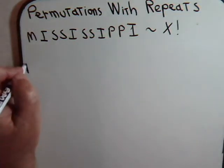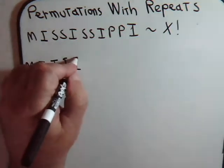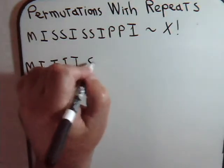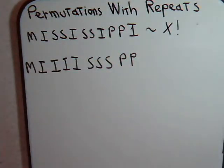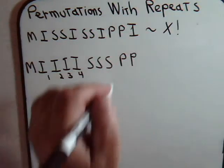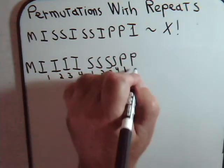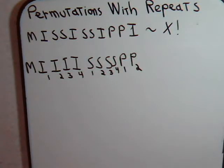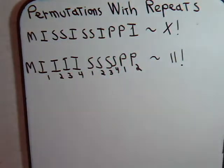We certainly suspect that x factorial is going to be less than eleven factorial. To figure out what it is, let's take our letters from Mississippi and write them out — four I's, four S's, and two P's. Let's put tags on these to make them artificially distinct: I-one, I-two, I-three, I-four, and the same for the S's and P's. Now with eleven distinct letters, we know the number of permutations is eleven factorial.